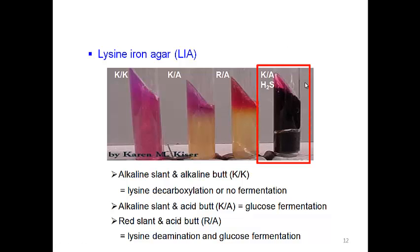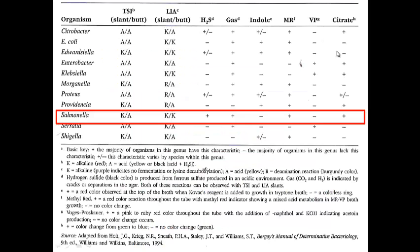This Salmonella table shows the common features of Salmonella in biochemical testing. These combinations — TSI, LIA, hydrogen sulfide, gas, indole, and VP — can differentiate between Salmonella and other bacteria like Citrobacter or E. coli. That's all, thank you.